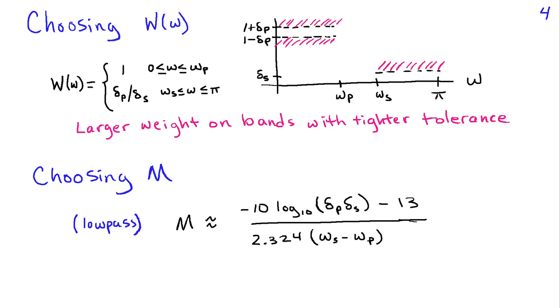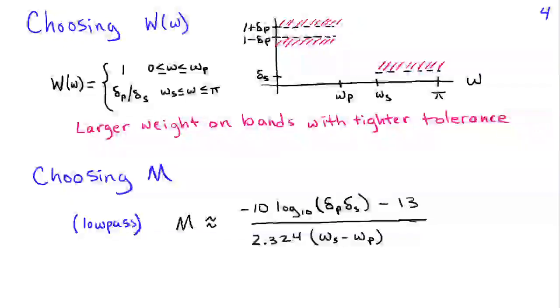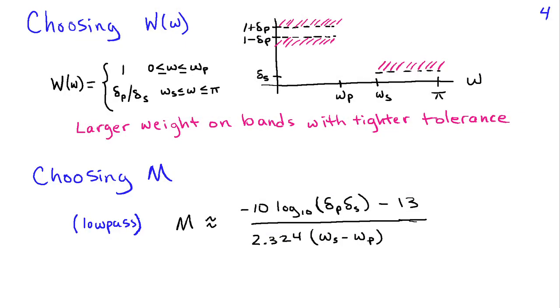This minimax criteria is extremely useful because it gives us FIR filters with very well controlled ripple in stop and pass bands and we can alter the balance or the strength of the ripple by using the weighting parameter W of omega.